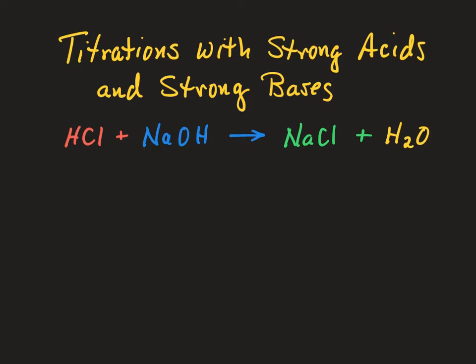Let's consider things we talked about in General Chemistry 1 — titrations with strong acids and strong bases. We have a strong acid, hydrochloric acid, and a strong base, sodium hydroxide. Our products are going to be the salt sodium chloride and water.